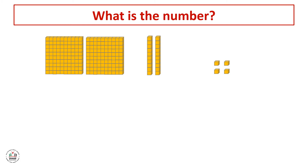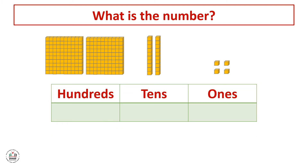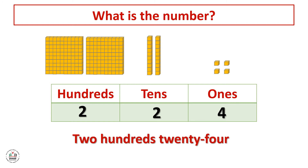The last example here. Here we have 4 ones, and the number of tens here is 2, and the number of hundreds is also 2. So the number here is 2 hundreds, 24.